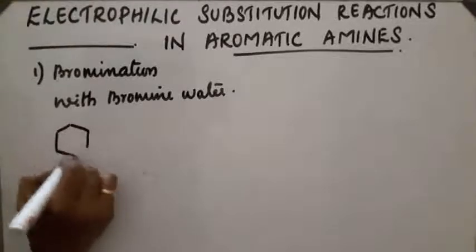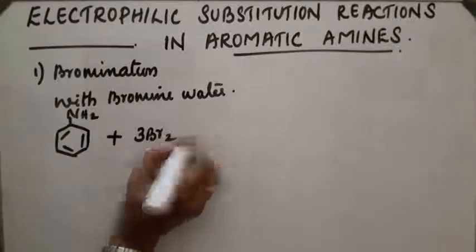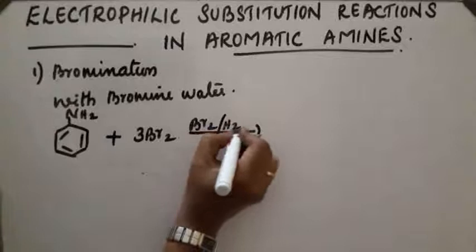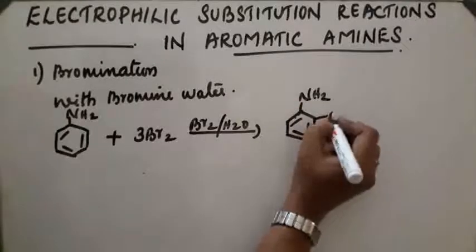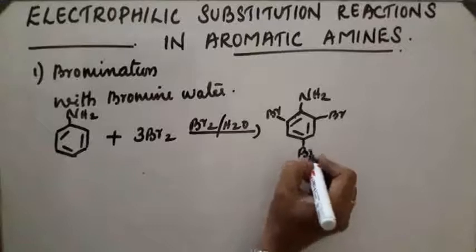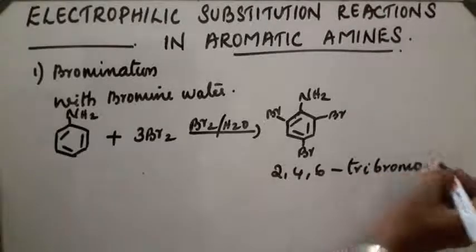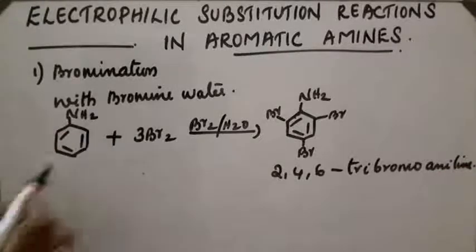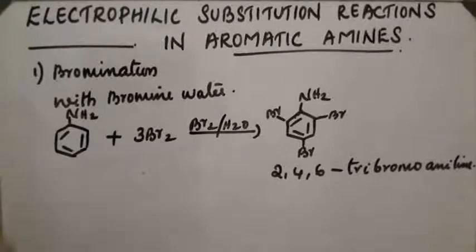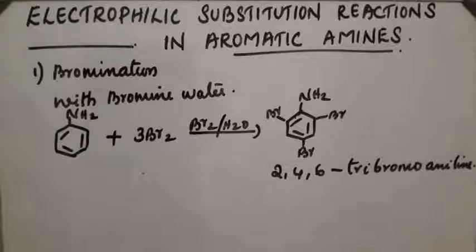Aniline on bromination gives 2,4,6-tribromoaniline as the product. This is because due to the presence of the NH2 group, the benzene ring is highly electron rich. So bromine comes and attacks at the ortho and para positions of the benzene ring.